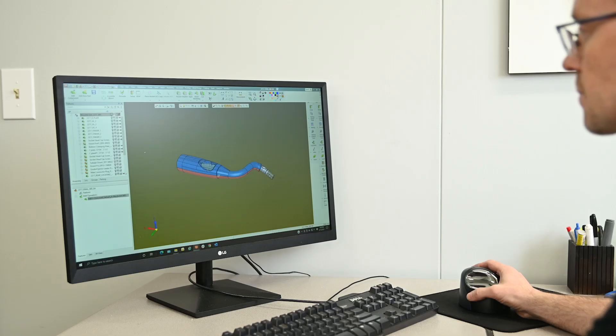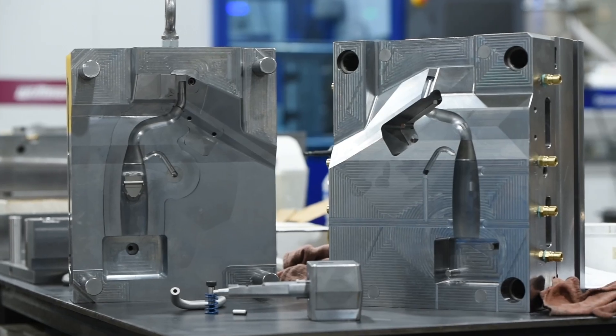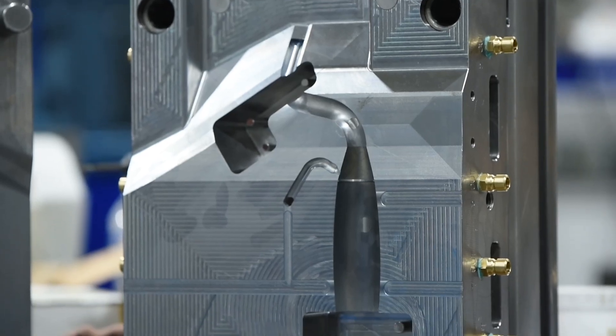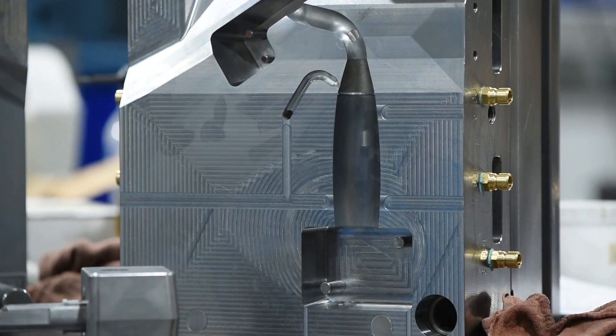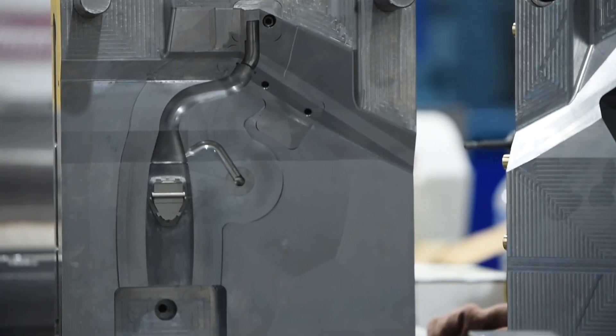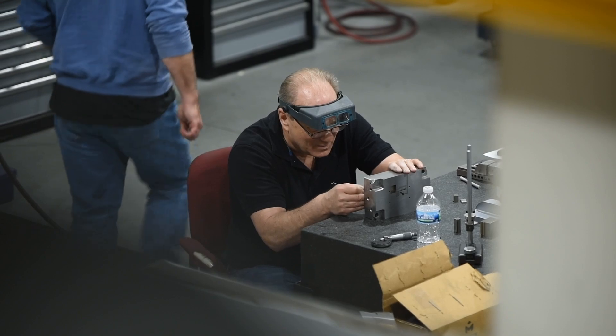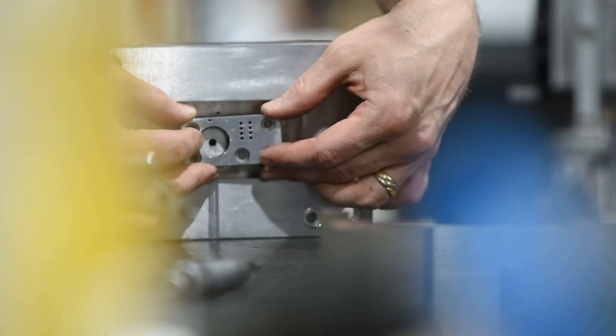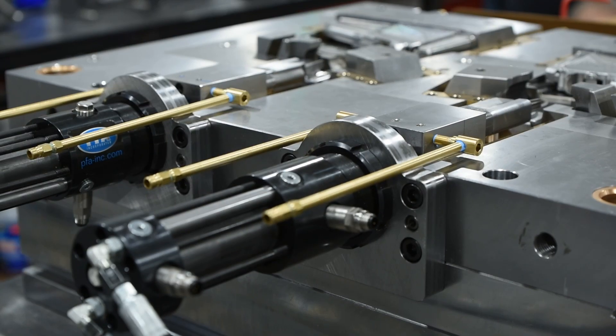One of the neatest things recently that we've been working on is a shift lever for Ford. It is an overmolded steel rod on a nylon-based plastic. We've designed and built the mold.